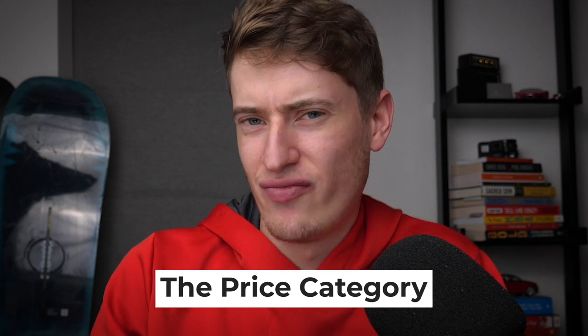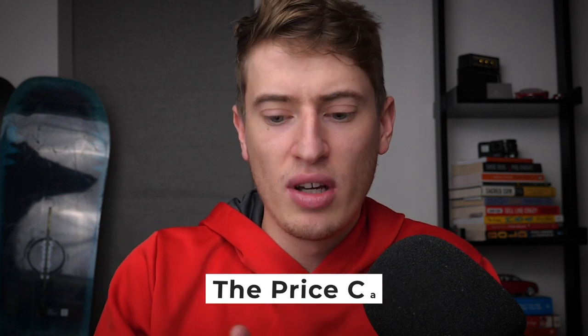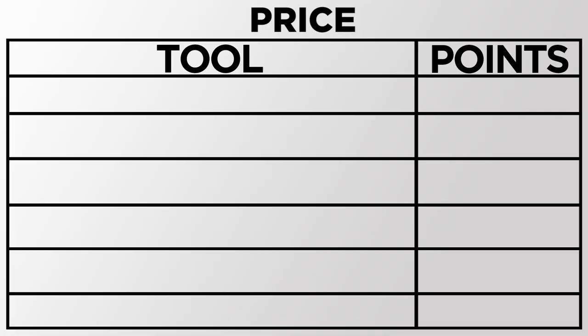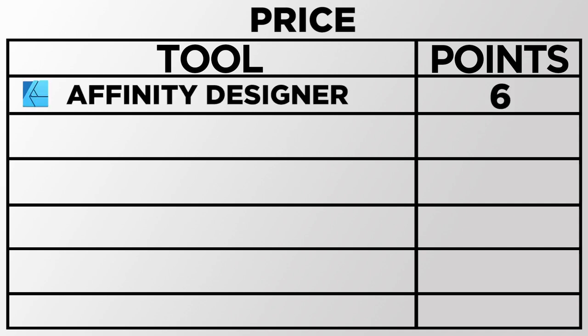Part one is price — which tool offers the best price. Affinity Designer gets six points because it costs £49, which is about $60, and that is a one-time fee. There's none of this monthly paying, just a one-time fee. Placeit comes in second with five points at $12.71 a month with my affiliate link in the description, or around $15 a month otherwise.